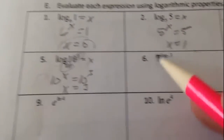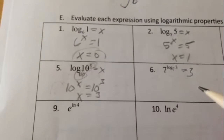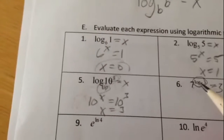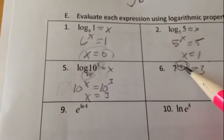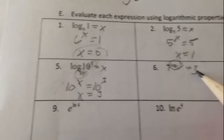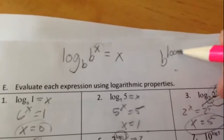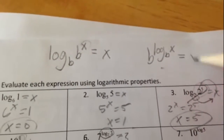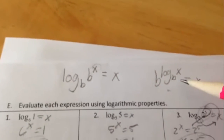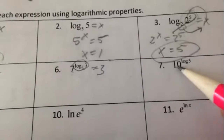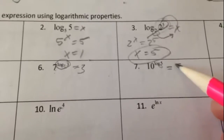Same thing: people get really scared when they see this, but when that base and that base match, they knock each other out, so you just get a 3. The log represents the power you need to raise 7 to to get 3 — if you raise 7 to that power, you get 3. So B to the log base B of x equals x. If that base and that base match, they undo each other — those are your cancellation properties. Since we didn't write the base for this log, it's assumed to be 10, so that base and that base match, and you just get 5.